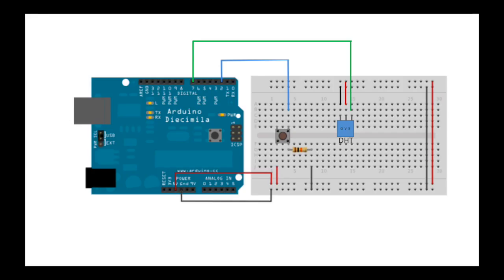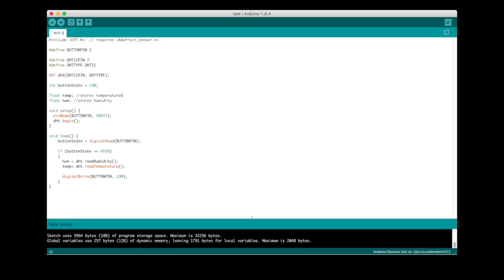Next we'll add a DHT temperature sensor. Connect positive to positive, ground to ground, and we'll connect our signal wire to pin 7. Adding the sensor to our code looks like this. We have to add a library for DHT, which itself requires another library. I'll put links for the downloads for both of those in the description. And we'll create two variables to store temperature and humidity, and in our loop have these variables update constantly.